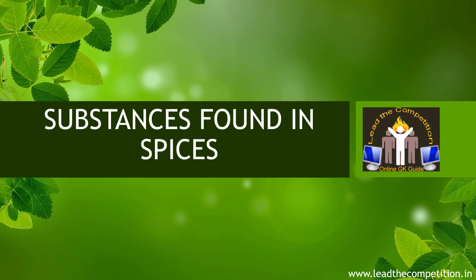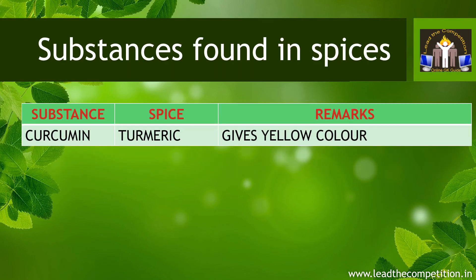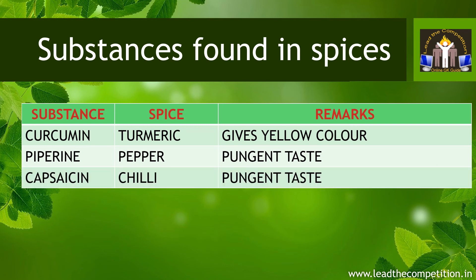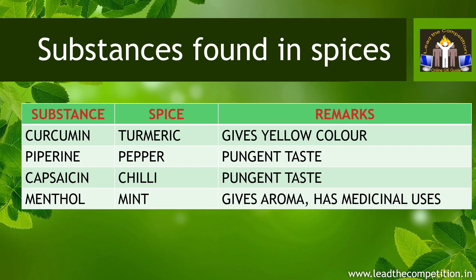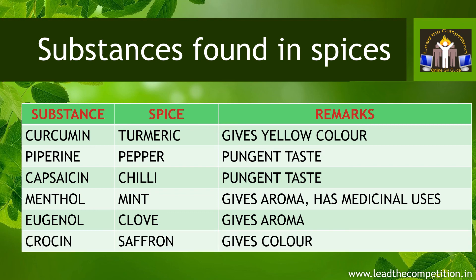Finally, here is a list of substances found in some of the spices. Curcumin is found in turmeric and is responsible for its yellow color. Piperin is found in pepper and gives pungency to its taste. Similarly, capsaicin found in chilies also gives pungency to its taste. Menthol is found in mint, has a sweet aroma and is used for medicinal purposes. Eugenol found in cloves is responsible for its aroma. Crocin is found in saffron and is responsible for its color.